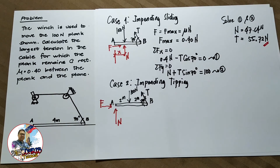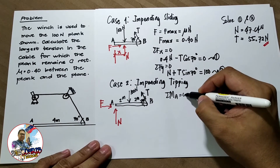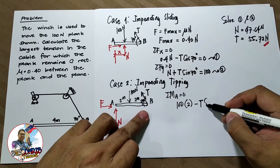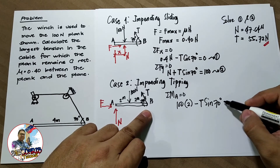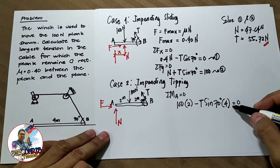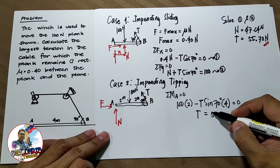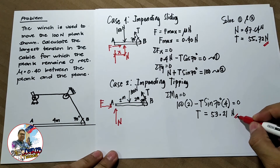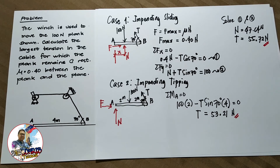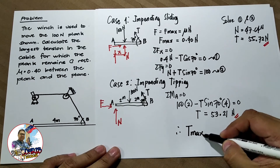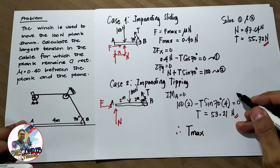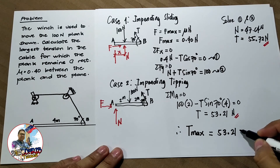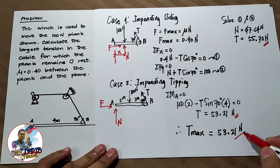Taking the summation of moments about point A equals zero: 100 times 2 minus T sine 70 degrees times the moment arm 4 equals 0. It follows that T equals 53.21N. This is the maximum value of T for case 2. Therefore, the maximum value of T required so that the plank remains at rest is the smallest value, which equals 53.21N. That is our final answer.